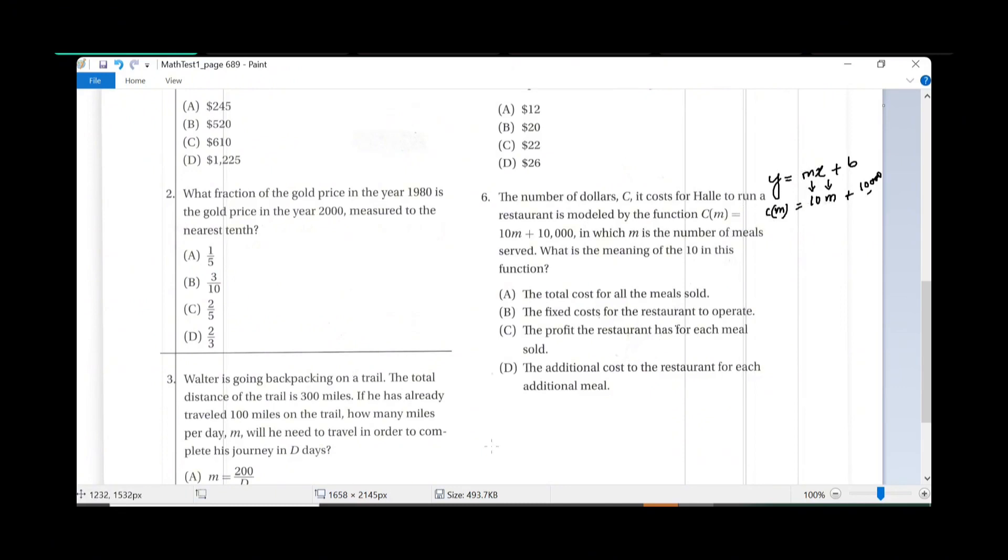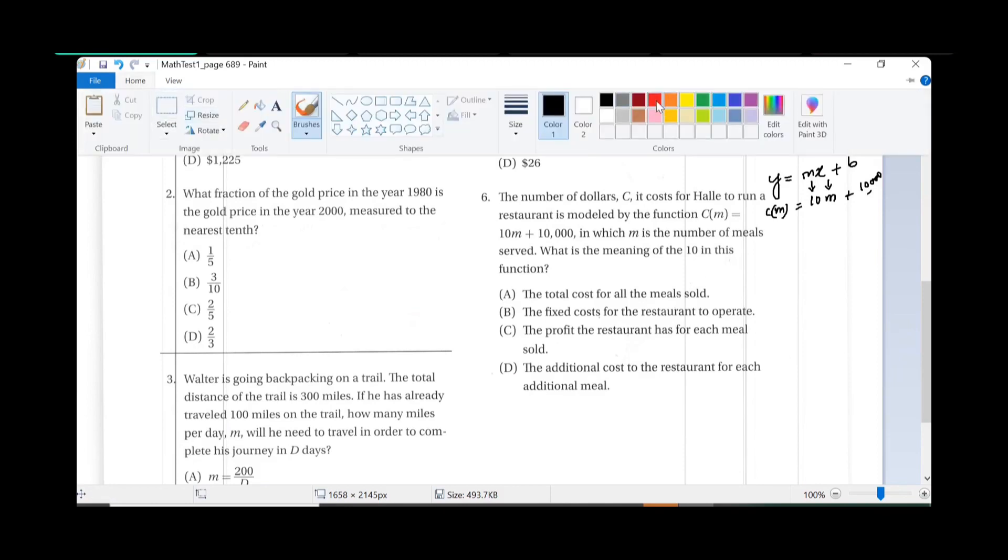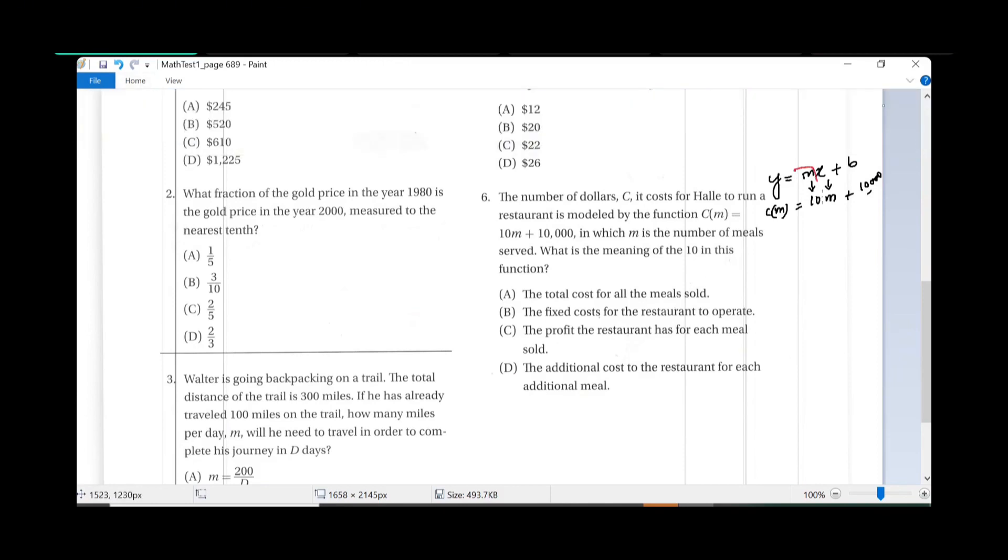So what is the slope? Slope is 10. That's the unit rate of change, change per one item, not the total. Fixed cost means the y-intercept.